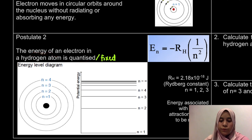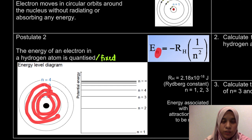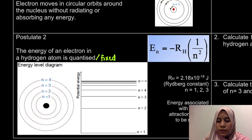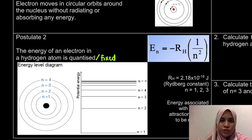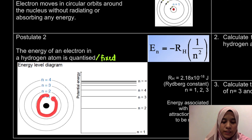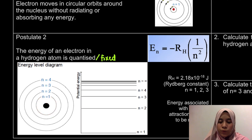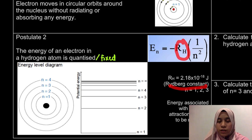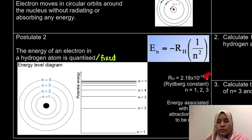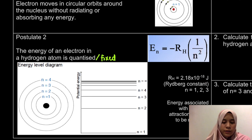This is the first formula for Chapter 2: En = -RH × (1/n²). E stands for energy, n is the number of the shell or energy level (1, 2, 3, 4, etc.). The negative sign is because the nucleus has a positive charge (protons), and the electron is attracted to it — hence the negative sign in the formula. RH is the Rydberg constant, which is 2.18 × 10⁻¹⁸ J. You don't have to memorize it; it's in the list of constants. The unit is Joules because we're dealing with energy.